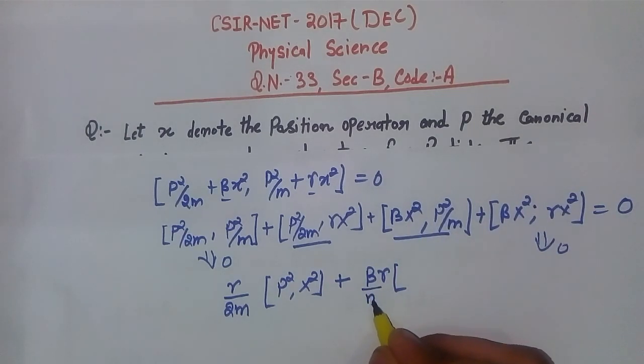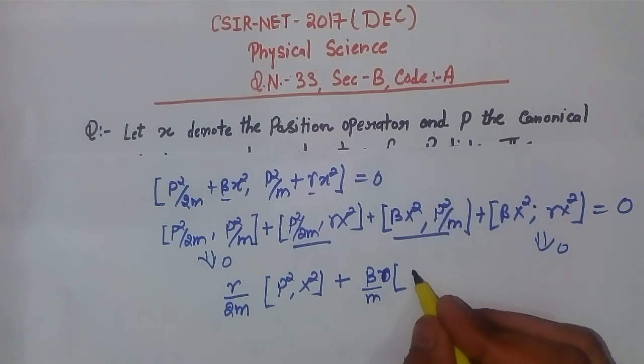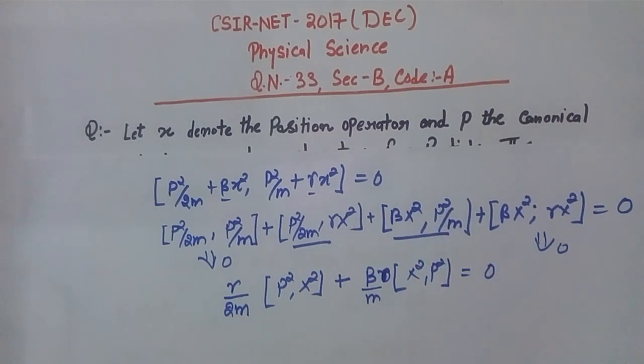Plus β/m... sorry, β/m. Gamma not here. [X², P²] = 0.